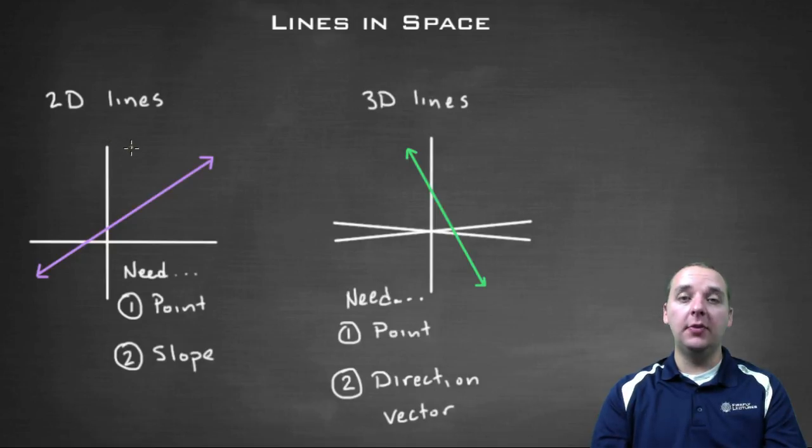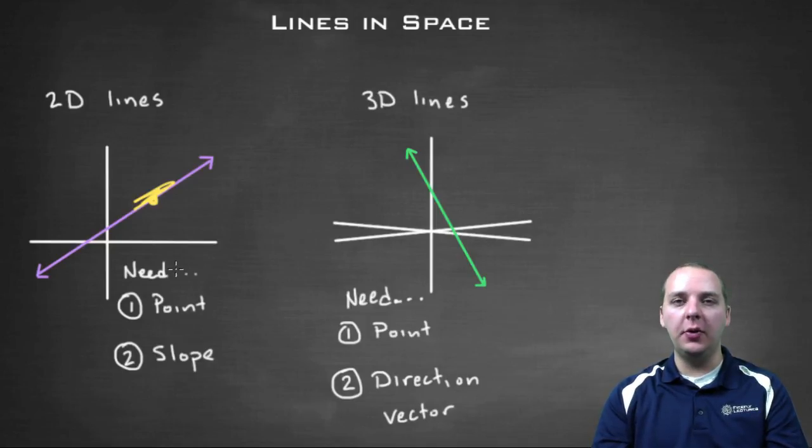To write the equation of a line in a plane, you only need two things: a point on the line and the slope of the line. If you have those two things, it's very easy to write it as y equals mx plus b in slope-intercept form, or you can use point-slope form. If you have these two things, it's pretty straightforward, and I'm sure we're all very good at writing an equation of a line in a plane.